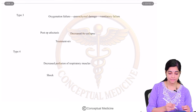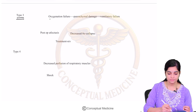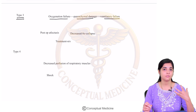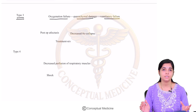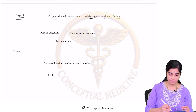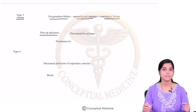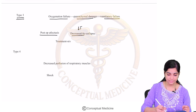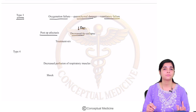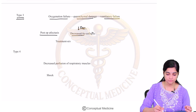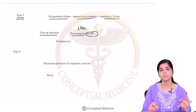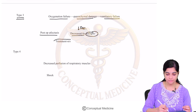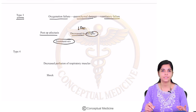Now let us move on to type 3 respiratory failure. In type 3, initially there is oxygenation failure, then parenchymal damage, followed by ventilation failure. This is commonly seen in post-operative atelectasis. In post-op atelectasis, the functional residual capacity (FRC) of the lungs is reduced, resulting in lung collapse. Many alveoli are not recruited for ventilation, leading to collapse. Treatment involves non-invasive ventilation.